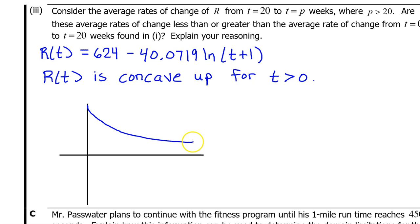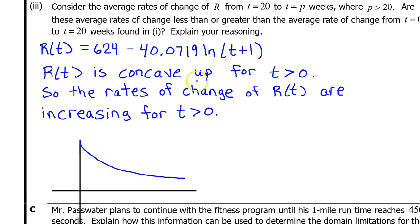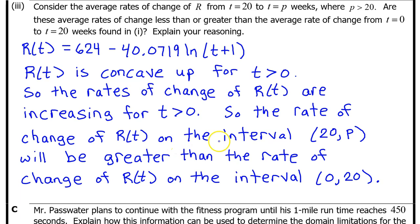This is how you can see what R(t) looks like using the graphing calculator. In fact, I'm going to adjust my sketch a tiny bit based on what we saw. What matters is that R(t) is concave up for t greater than 0. We have learned that when a function is concave up, the rates of change of that function are increasing. So, the rates of change of R(t) are increasing for t greater than 0. So, the rate of change of R(t) on the interval from 20 to p will be greater than the rate of change of R(t) on the interval from 0 to 20. Students will often lose a point on this problem for not being specific enough. For example, make sure you say R(t) is concave up. Don't say the curve is concave up or the function is concave up or something vague like that. And, you have to say the rates of change of R(t) are increasing. Don't just say the rate of change is increasing.